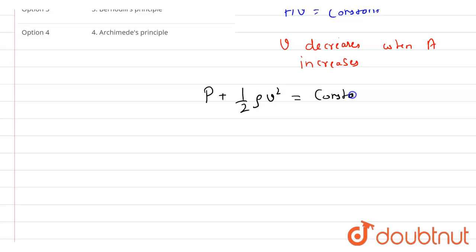But here velocity is decreasing, so if v decreases, p will increase. So when v decreases, p increases.